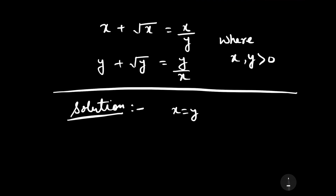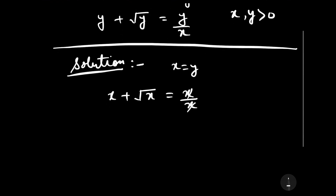Putting the value y = x into the first equation, we have x plus √x equals x divided by x, which simplifies to x plus √x equals 1.